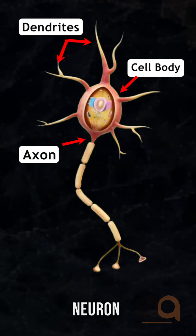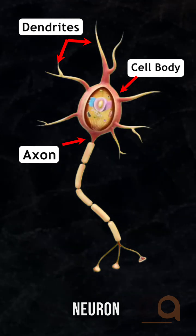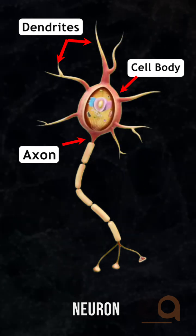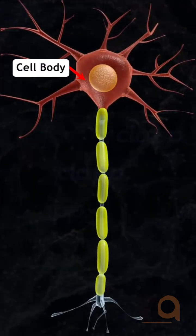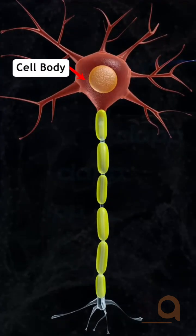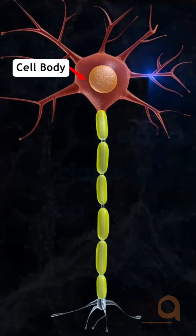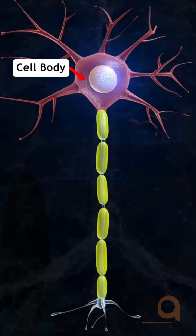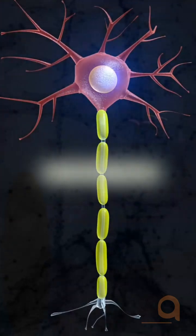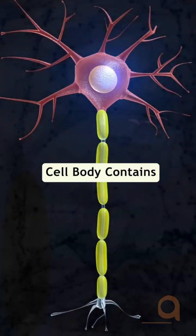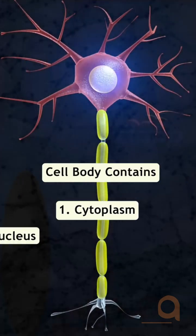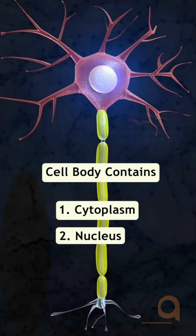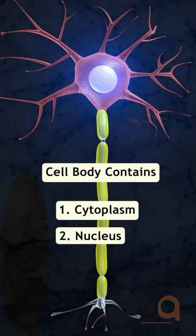Dendrites are the short fibers that project out of the cell body. These fibers receive impulses and transmit them to the cell body. The cell body contains cytoplasm, nucleus, and Nissl granules.